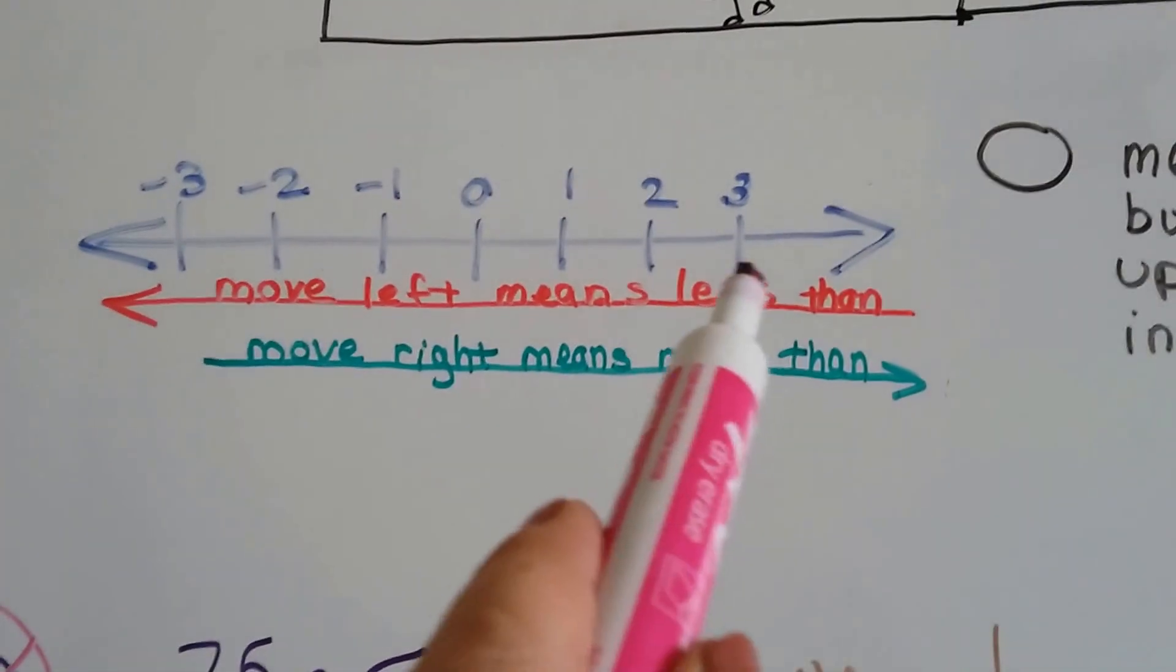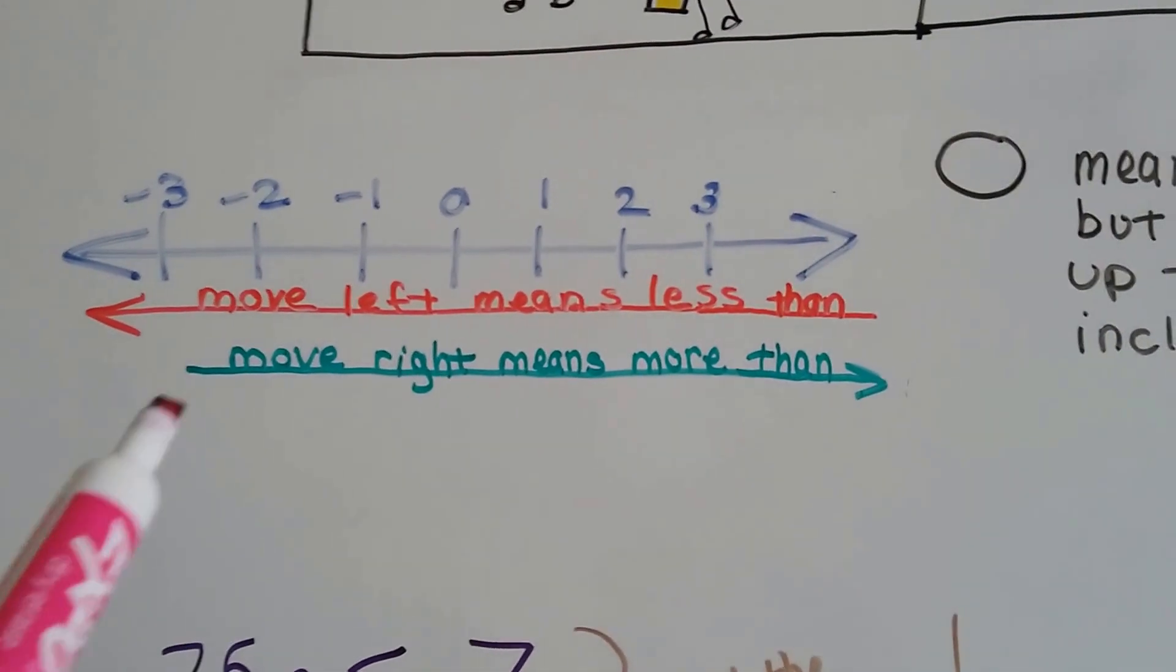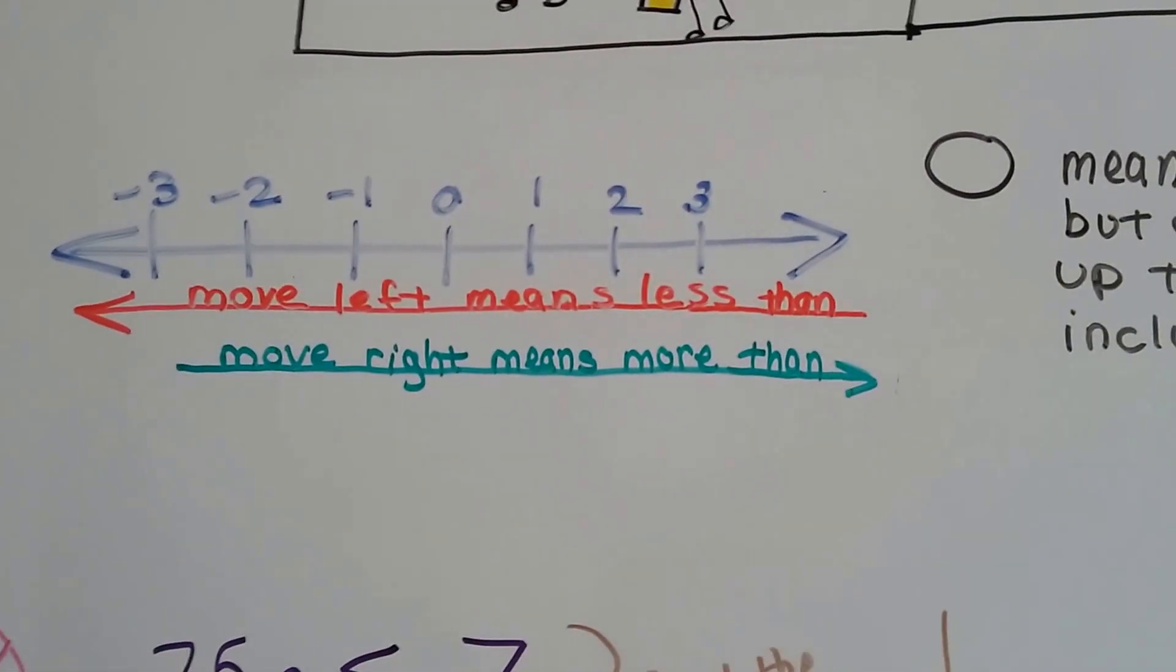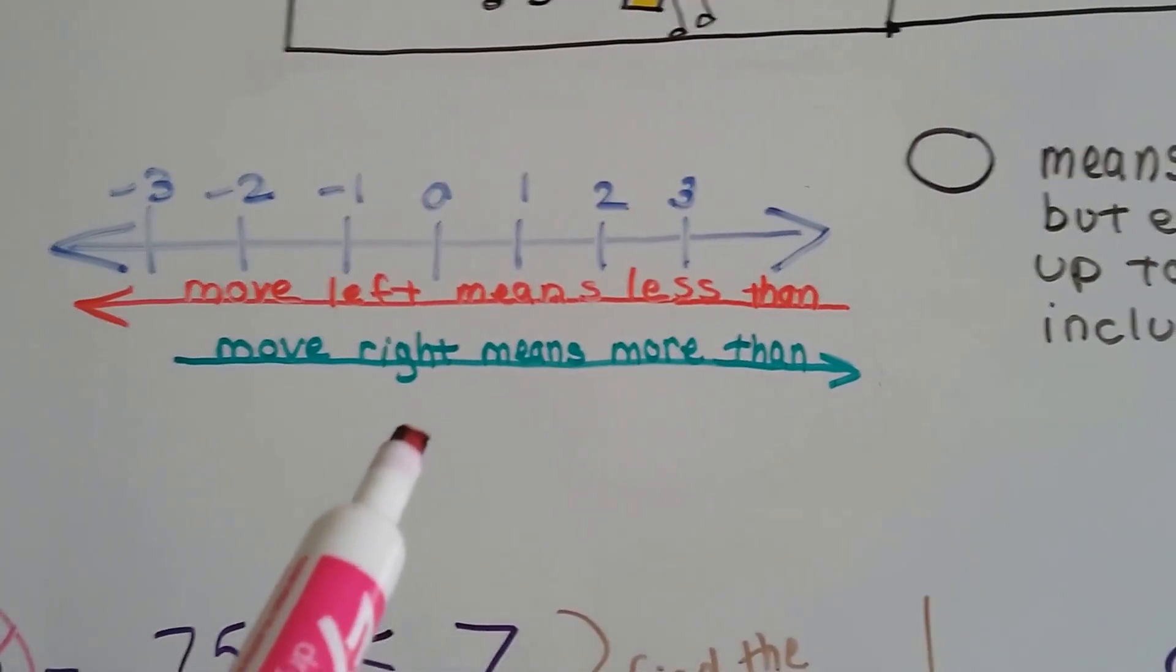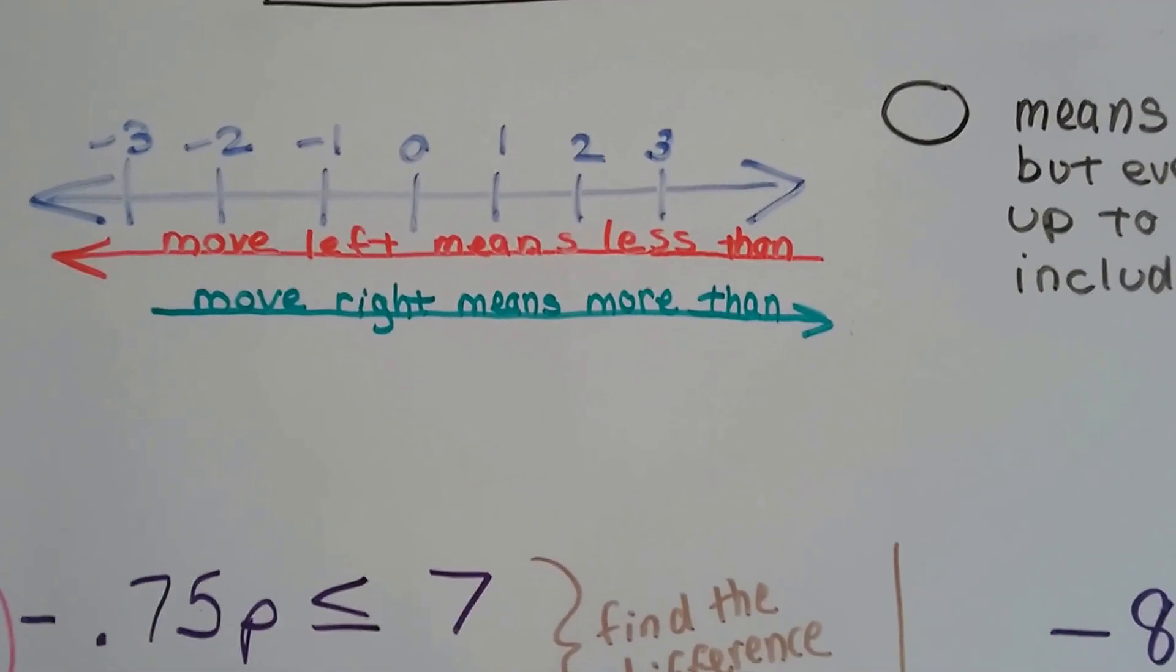And remember, as we move to the left on a number line, it's becoming less, and as we move to the right, it's becoming more. So when you're doing your less than or greater than signs, remember which way you're supposed to be heading on the number line with your arrow, okay?